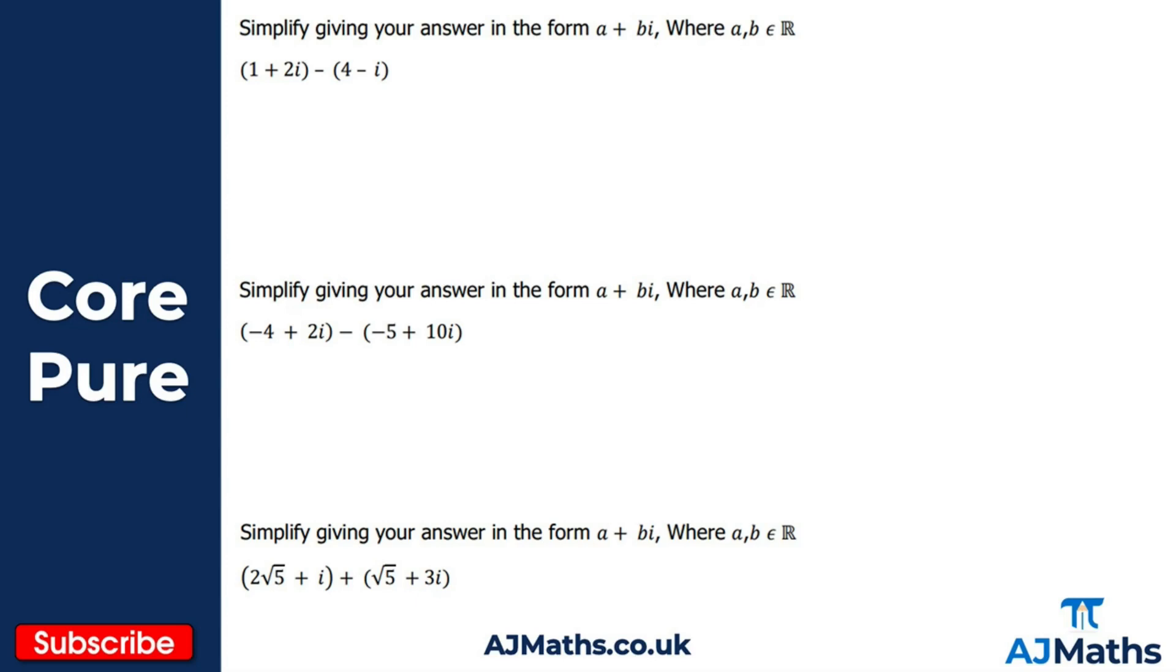So hopefully you managed okay with these. Let's take a look at what you should have got now. For this first one here, again just splitting this up into real parts, adding those or subtracting those separately. So 1 minus 4 gives me minus 3, and then 2i minus minus i, so again just being careful with your signs here, that would give me plus 3i.